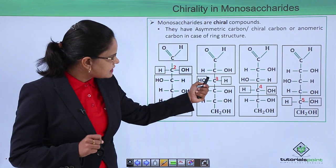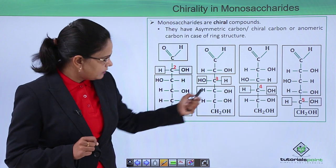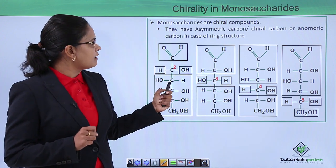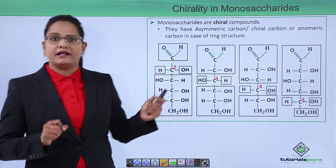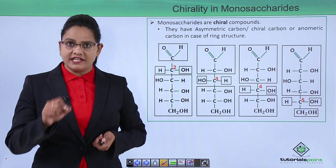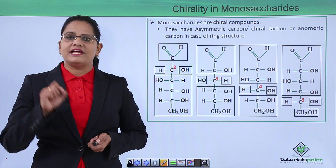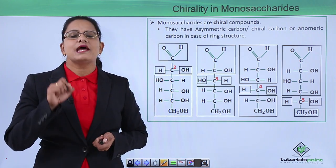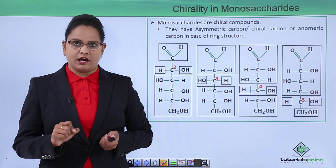Similarly, these are all chiral carbons. And if we talk about the ring structure, then this chiral carbon is known as the anomeric carbon.